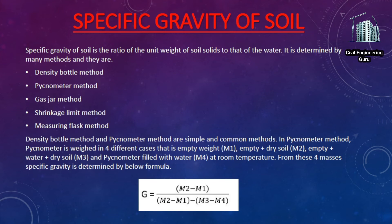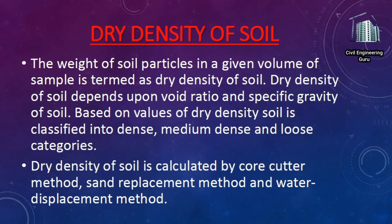In the pycnometer method, the pycnometer is weighed in four different cases: empty weight M1, empty plus dry soil M2, empty plus water plus dry soil M3, and pycnometer filled with water M4 at room temperature. From these four masses, the specific gravity is determined using the appropriate formula.